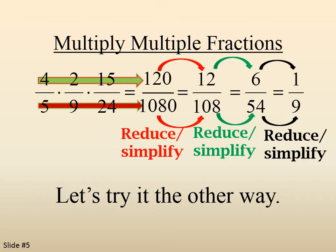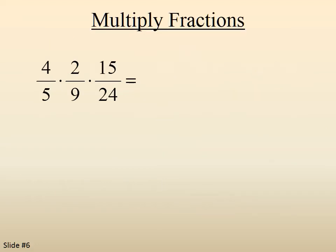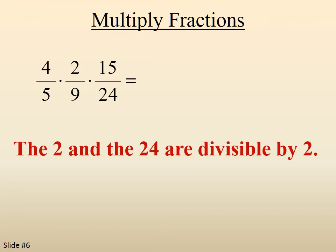Let's try it the other way. We're simplifying first. We notice that the 2 and the 24, one on the top, one on the bottom, are both divisible by 2, which then gives us a 1 in place of the 2 on top, and the 12 in place of the 24.